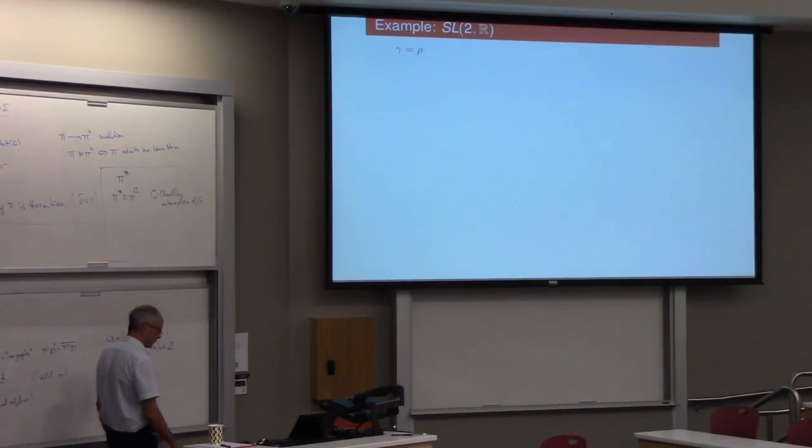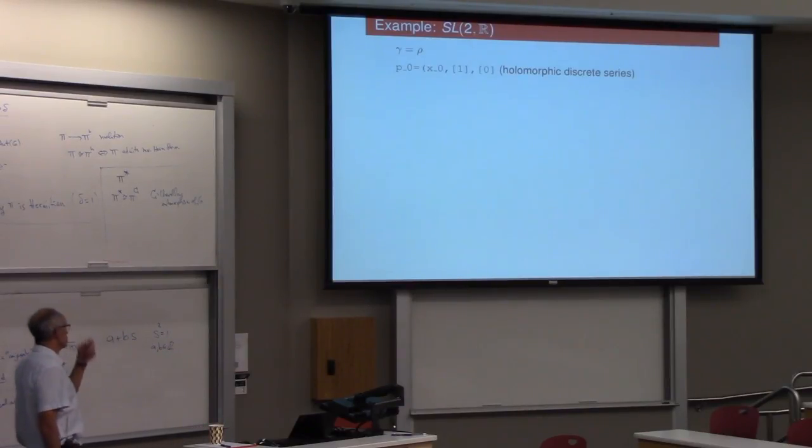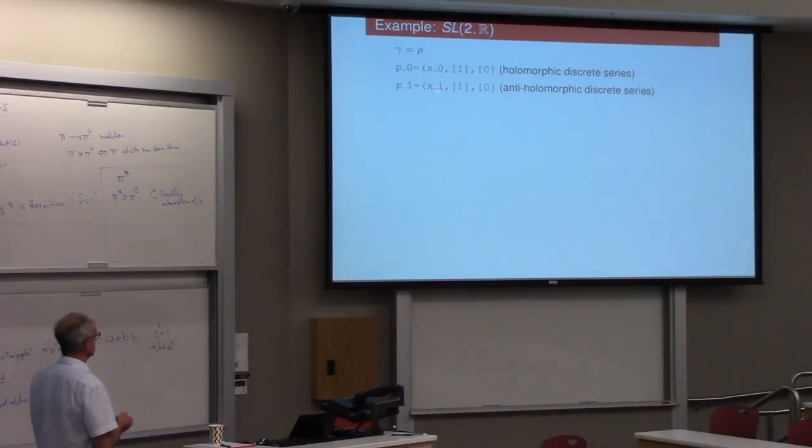So, as always, the only way to understand this is to look at SL2. So, let's do SL2 example. So, in the list of the four representations of SL2, one of them is x_0,1,0. That's the holomorphic discrete series. And x_1,1,0 is the end of the holomorphic discrete series. It should be clear that Atlas would always close the parenthesis.